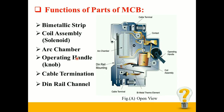Fourth is the operating handle, which is also known as the knob. The knob is used for manual switching of the MCB. Fifth is the cable termination — there are two cable termination points: one for the incoming cable and one for the outgoing cable. Sixth is the thin rail channel, generally used for mounting the MCB. Last is the external casing, which holds all the internal parts and protects them from dust.